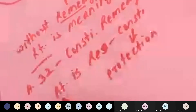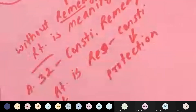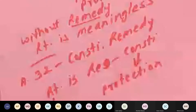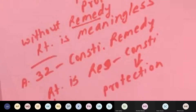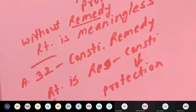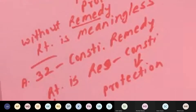Rights recognized under the constitution are known as fundamental rights under Part 3 of the constitution, from Article 12 onwards. These rights, if violated by the state or by any other person, give the aggrieved person a right to file a case and have direct access to the Supreme Court under Article 32. Therefore, Article 32 is also known as the right to constitutional remedy or the writ jurisdiction of the Supreme Court, which has been developed through public interest litigation.